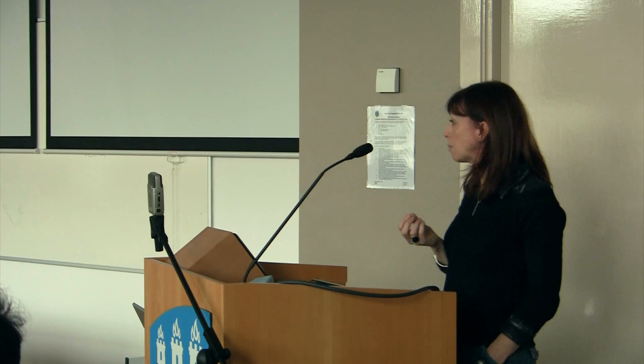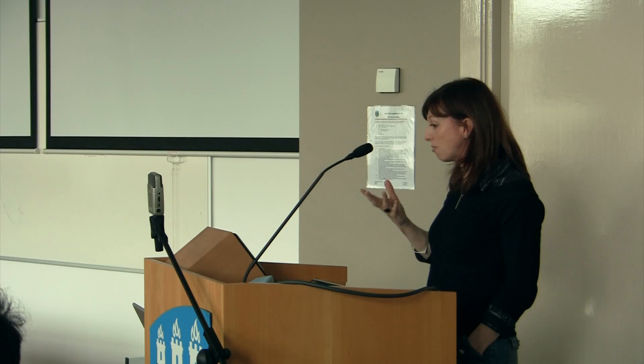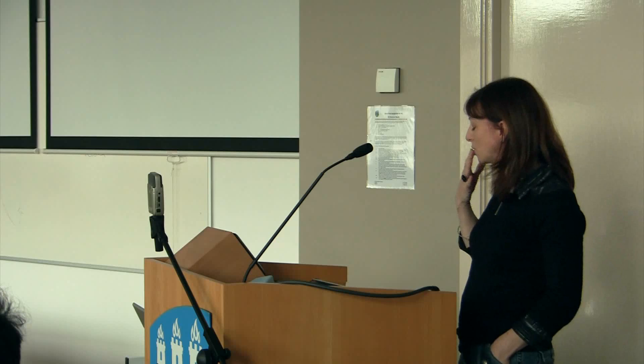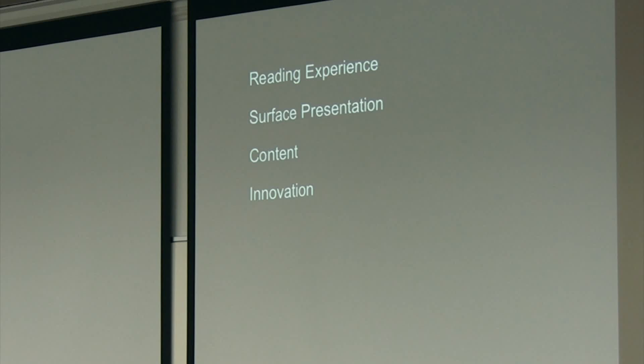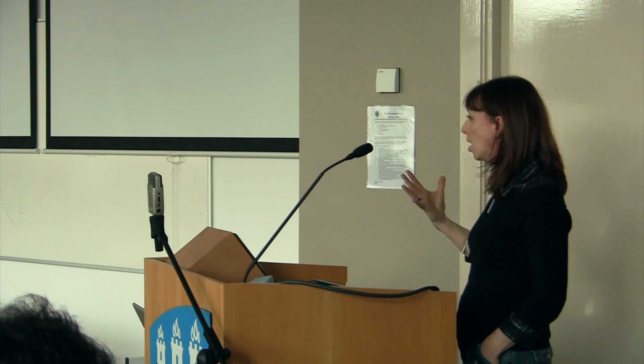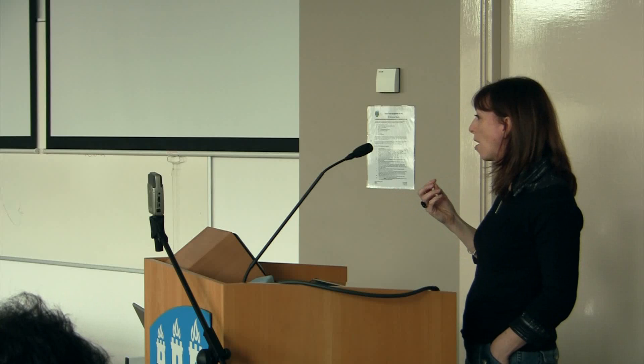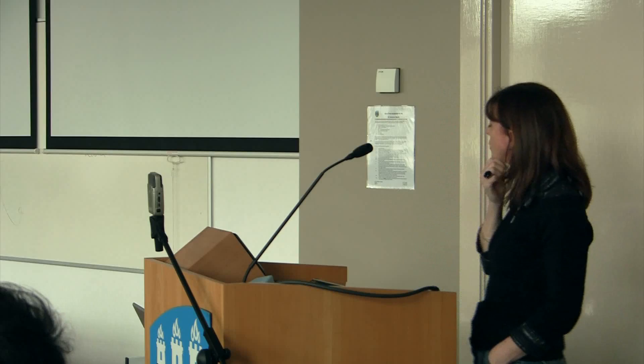We're starting to understand screen-based media and its interfaces — we're getting used to them. But they change from device to device, and oftentimes we have to learn new interfaces. I'm interested in what a page is on a screen, how do we relate the two, how do we deal with content that's changing where the reader can change the size, change the format, where the audience can interact with it, can interrupt the author, can engage the author in real time.